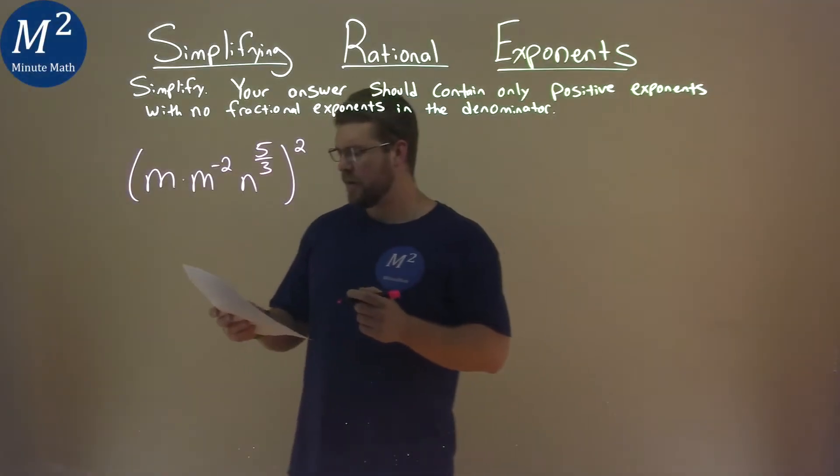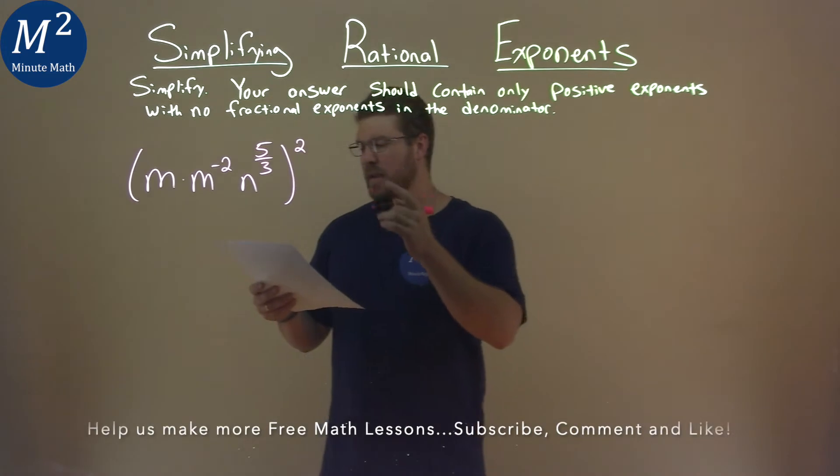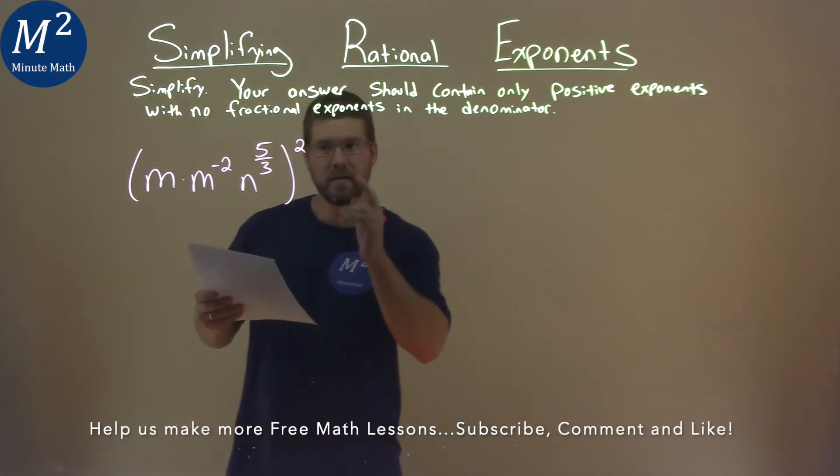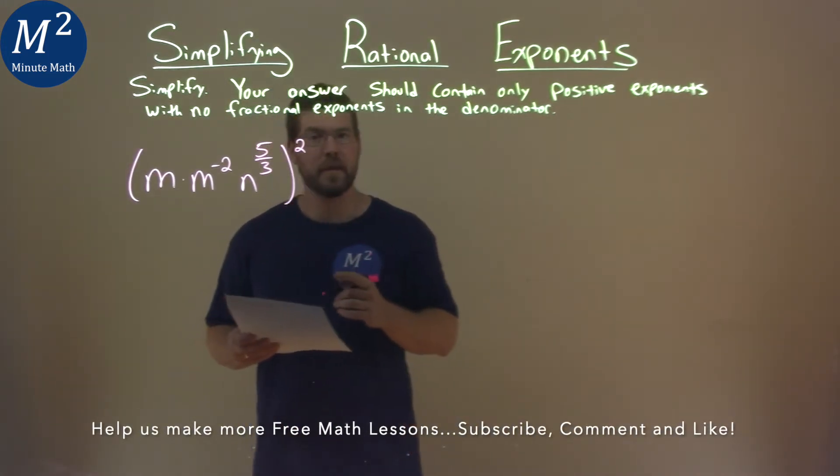We're given this problem right here: m times m to the negative two power times n to the five-thirds power all squared, and we've got to simplify.